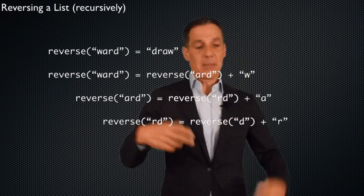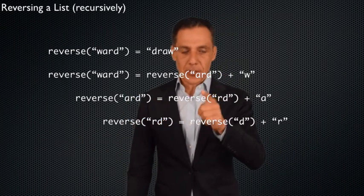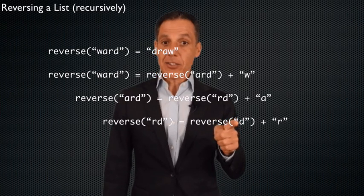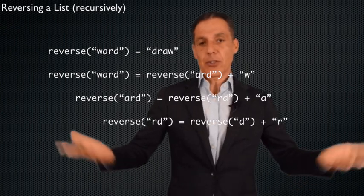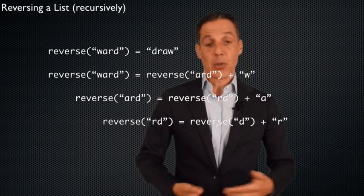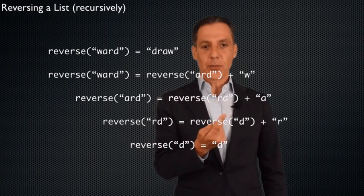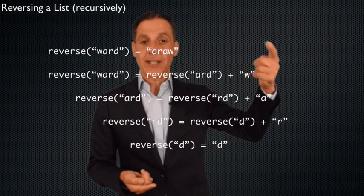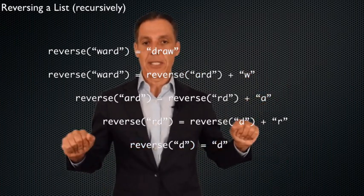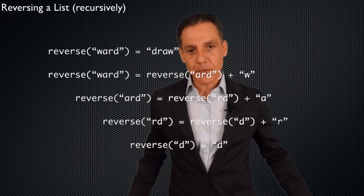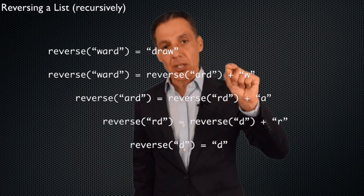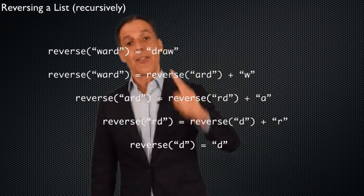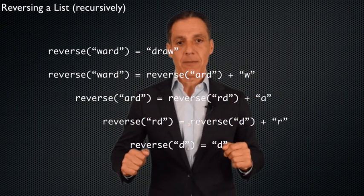What's the reversal of 'r-d'? Same game: take that first letter, shove it to the end, and then reverse a single letter. This looks like the base case I mentioned. If I have a single letter, reversal is trivial — there's no work to be done, no computation. It's just the letter. So the reversal of 'd' is just 'd'. Base case — no recursive call. This is like zero factorial equals one. No work to be done. Now what we've done is built up an expression with a series of string concatenations, and we just have to work our way back up this stack to create the final answer.